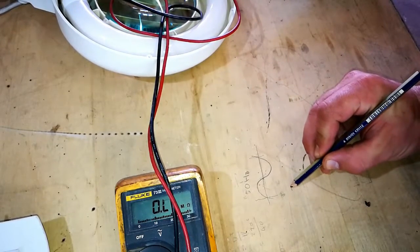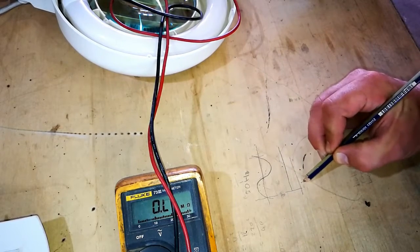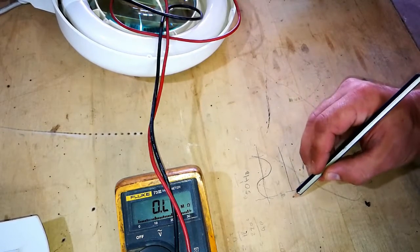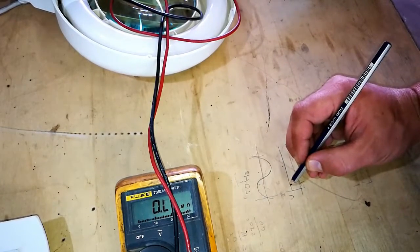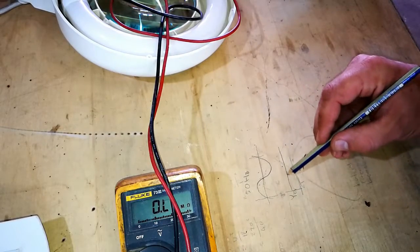DC power is just a flat line, flat voltage line. This is time and this is voltage. It's whatever. Let's say it's 12 volt. It's 12 volt all the time.